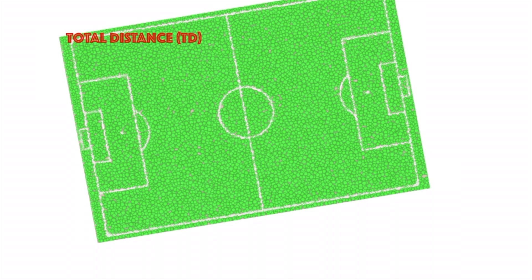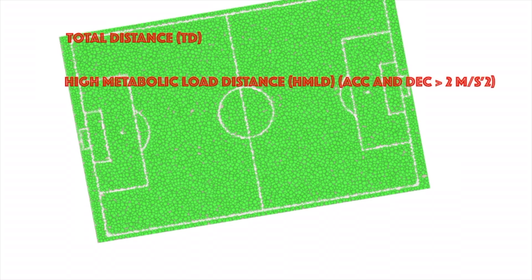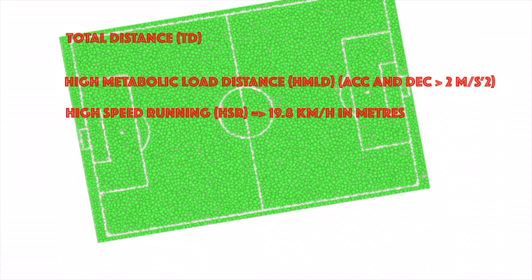The four metrics were: total distance; high metabolic load distance, which measures the total amount of high-speed running coupled with the total distance of acceleration and deceleration throughout the session; high-speed running, defined as runs at an equal or greater speed of 19.8 km per hour; and acceleration and deceleration.